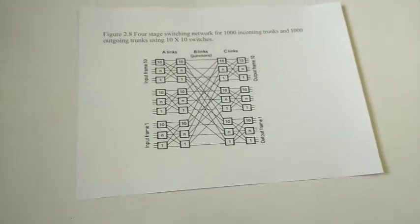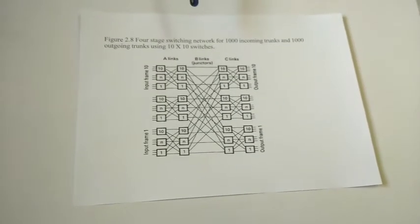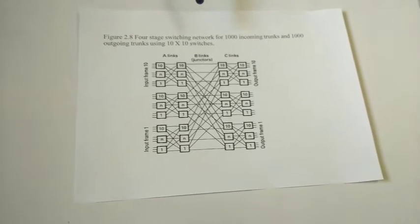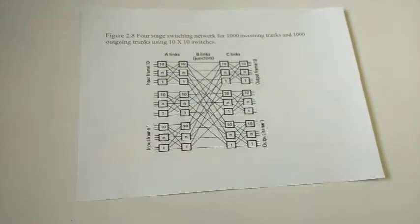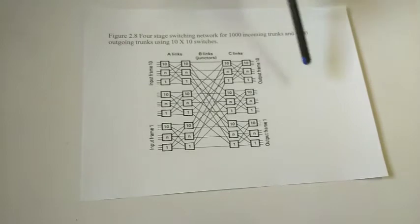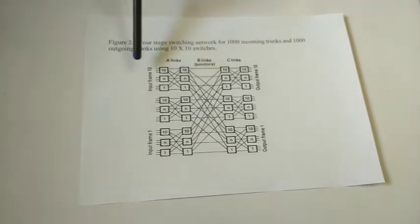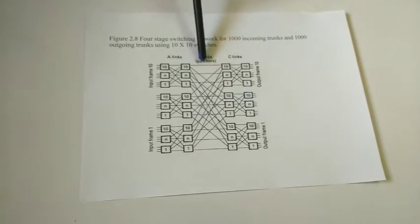We also have a higher exchange, that is the 4-stage network, where you can connect 1000 incoming trunks to 1000 outgoing trunks using 10 cross 10 switches. This is essentially a 2-stage link network, and if you have 10 such 2-stage networks, then 10 into 100 gives 1000 incoming lines. Similarly the outgoing side is the same. This gives A stage, B stage, and C stage network — 1000 incoming lines connected to 1000 outgoing lines with the help of 1000 links.